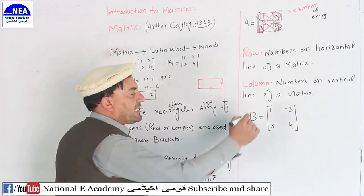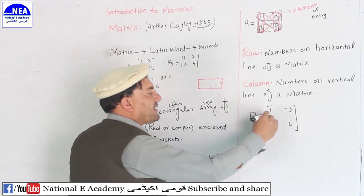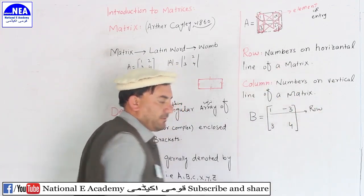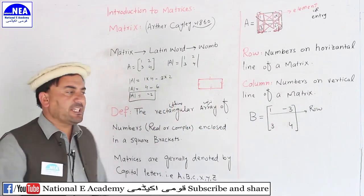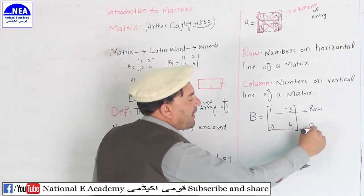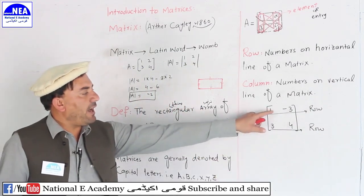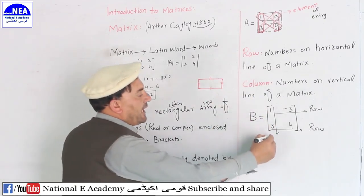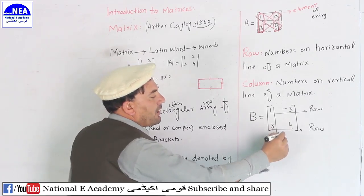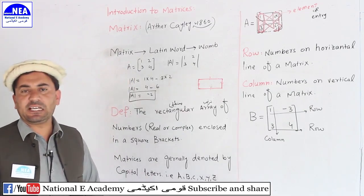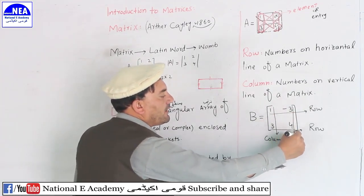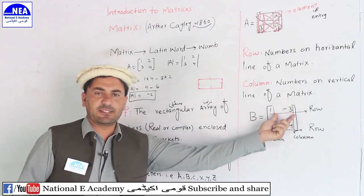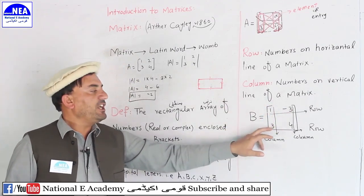For example, in the matrix [1, -3; 3, 4], the numbers 1 and minus 3 form a horizontal line — this is a row. The numbers 3 and 4 form another horizontal line — this is another row. For the columns: 1 and 3 form a vertical line — this is a column. Minus 3 and 4 form another vertical line — this is another column.